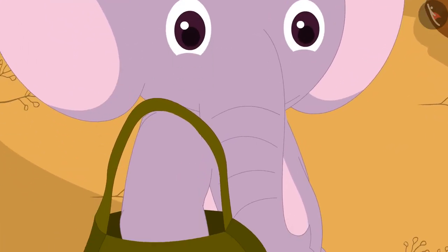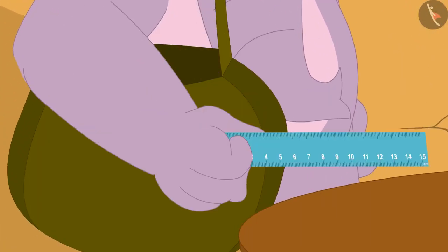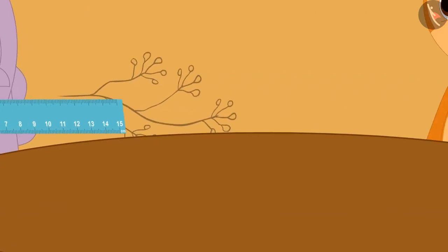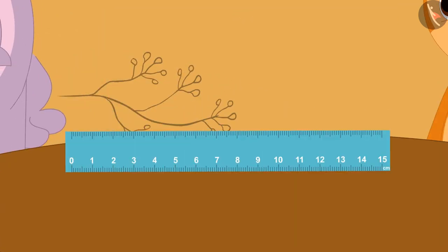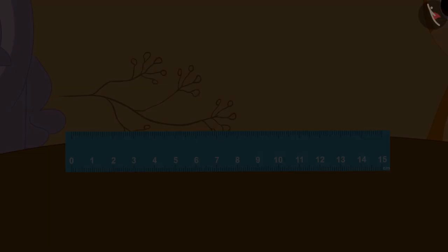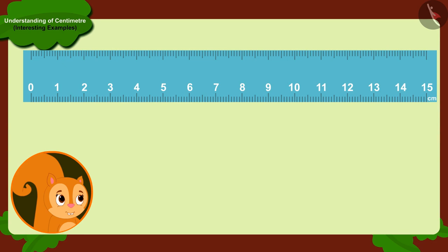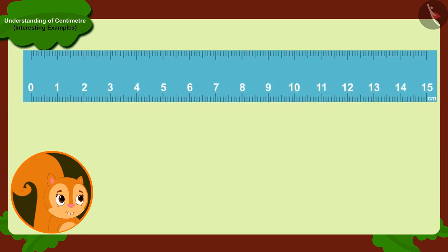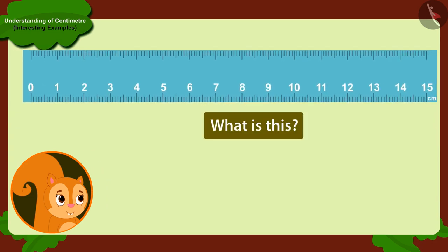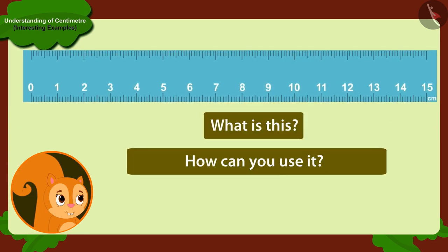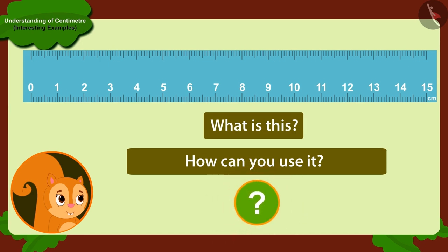Appu took out a plastic strip like this from his bag and placed it on the table in front of Chanda. Chanda asks him, what is this plastic strip and how can I use it to measure the length of objects in centimeters?